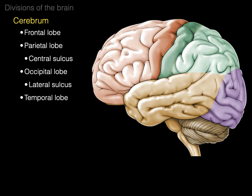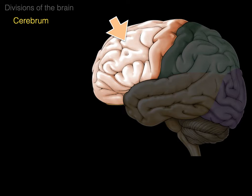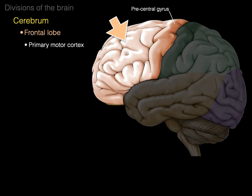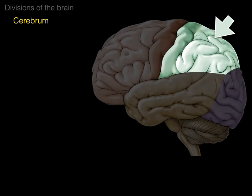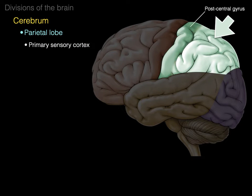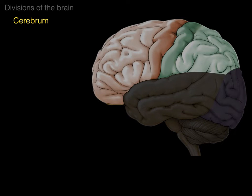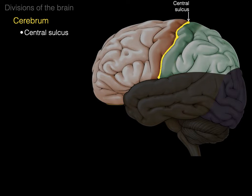The cerebrum has the following lobes, all named for the bones of the skull they lie deep to. Here is the frontal lobe, deep to the frontal bone, and it has the primary motor cortex localized in the precentral gyrus. The parietal lobe, deep to the parietal bone, has the primary sensory cortex in the postcentral gyrus. There is a structure called the central sulcus — a really big valley — between the frontal lobe and parietal lobe.